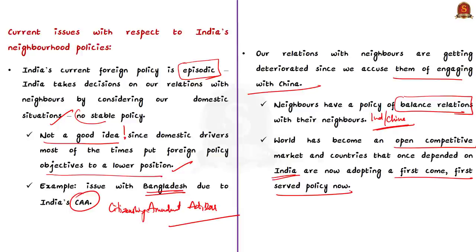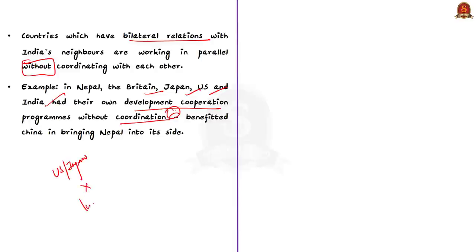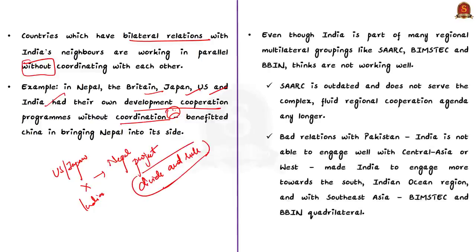If China comes with a good policy, these countries are ready to accept China's initiatives. Third, experts talk about the advantage China has. Most countries with bilateral relations with India's neighbors are working in parallel without coordinating with each other. For example, in Nepal, Britain, Japan, the US, and India had their own development cooperation programs but did not coordinate, often conflicting on different issues. China took this as an opportunity and used a divide-and-rule approach to bring Nepal into its orbit.